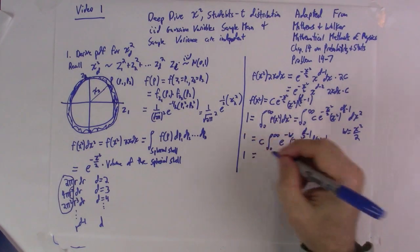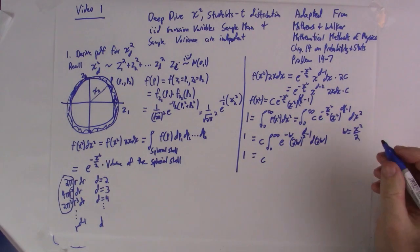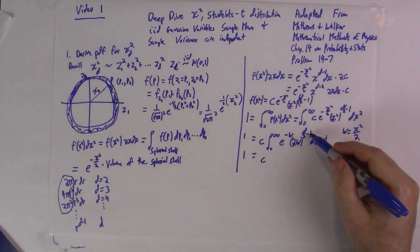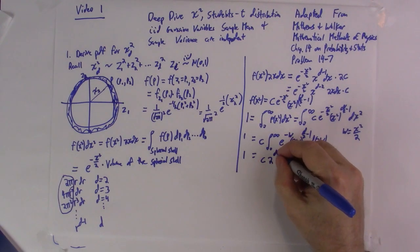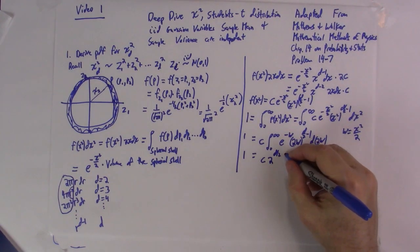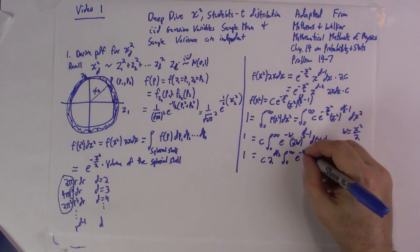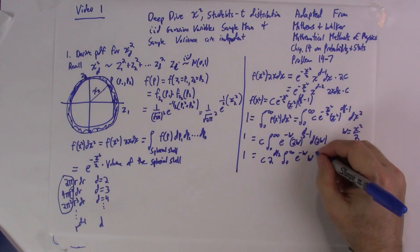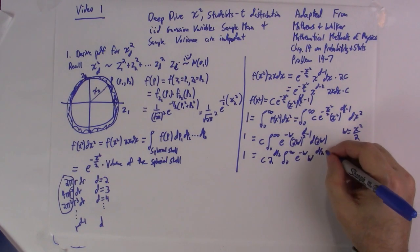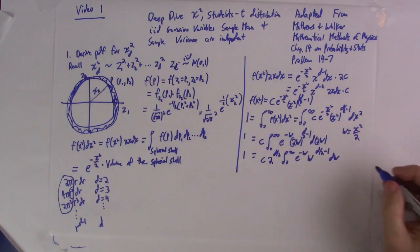This is equal to constant. Let's get the powers of 2. We have 2 to the d over 2 minus 1, and then another 2. So it's just 2 to the d over 2, the integral from 0 to infinity, e to the minus w, w to the d over 2 minus 1, dw.